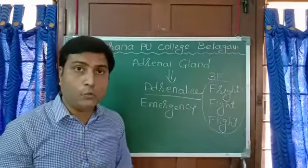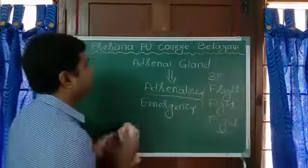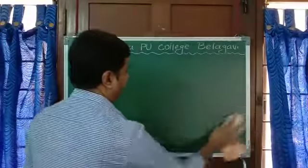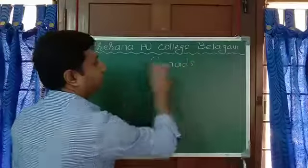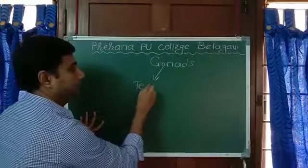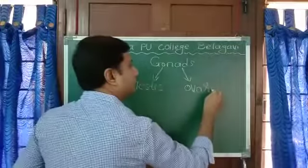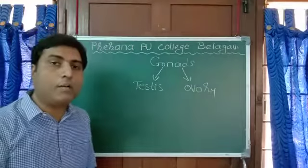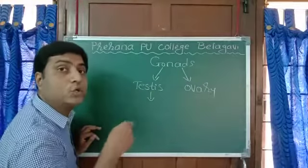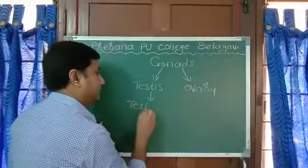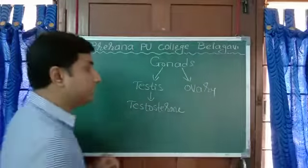Next we will move on to gonads. Gonads also act as endocrine glands. The male gonad is called the testis, and the female gonad is called the ovary. Both of them release hormones commonly called sex hormones. The hormone released by the testis is testosterone, and the hormone released by the ovary is estrogen.